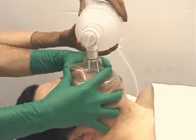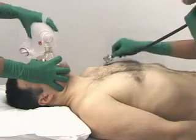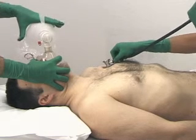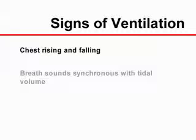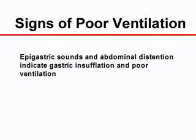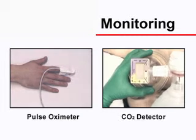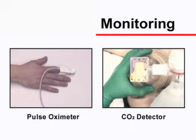Regardless of the technique used to ventilate the patient with a face mask, adequate ventilation can be assessed by inspecting and auscultating the chest and abdomen. The chest rising and falling and breath sounds synchronous with the delivered tidal volume suggest adequate ventilation. Gurgling epigastric sounds and tympanic abdominal distension indicate gastric insufflation and poor ventilation. Other monitoring tools such as pulse oximetry and a carbon dioxide detector can be very valuable.